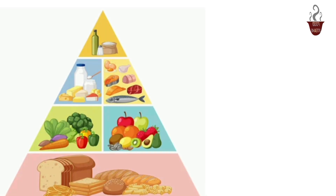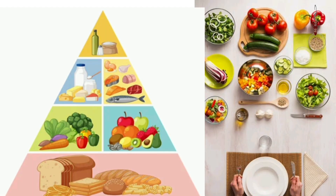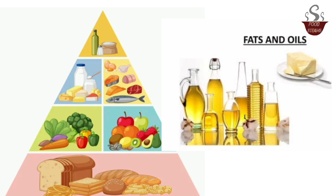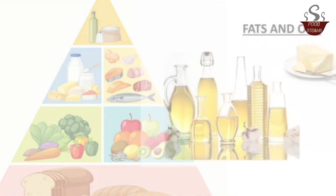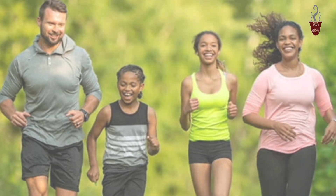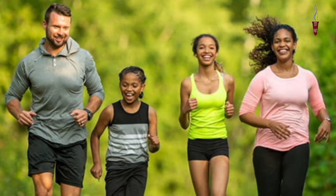The vertical divisions in the pyramid emphasize that foods at the base should be consumed in larger quantities, forming the majority of the diet, while those at the top should be eaten in moderation. This pyramid serves as a general guide to promote a balanced and nutritious diet for overall health and well-being.